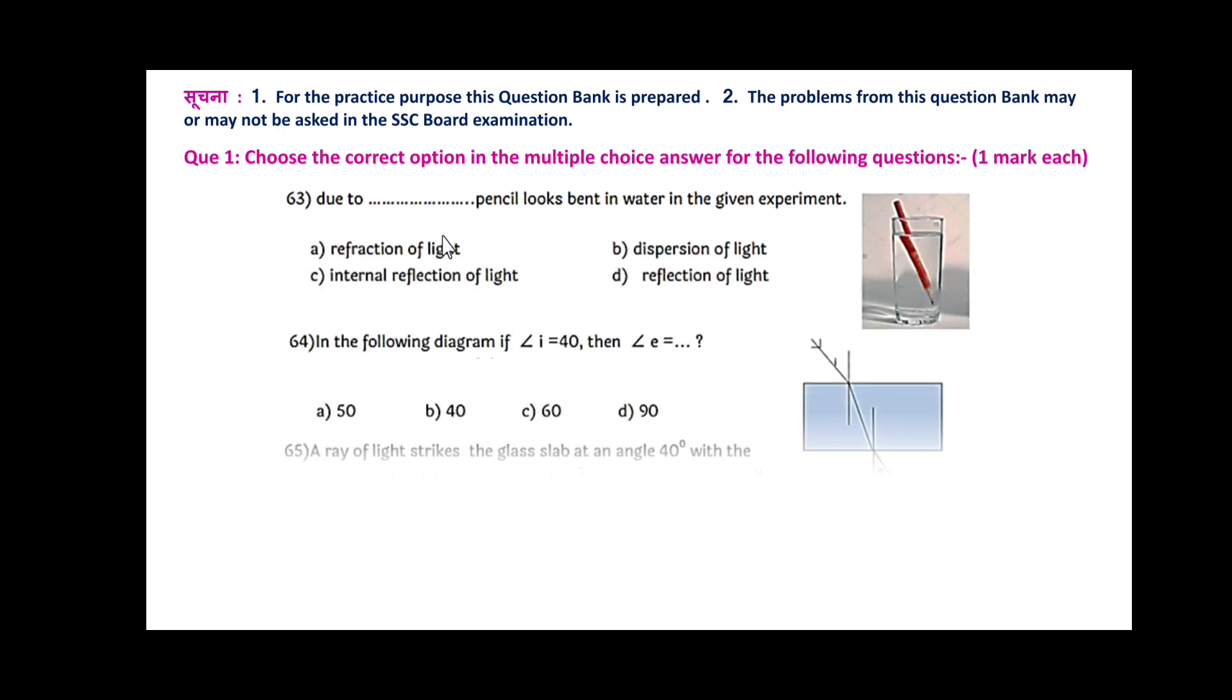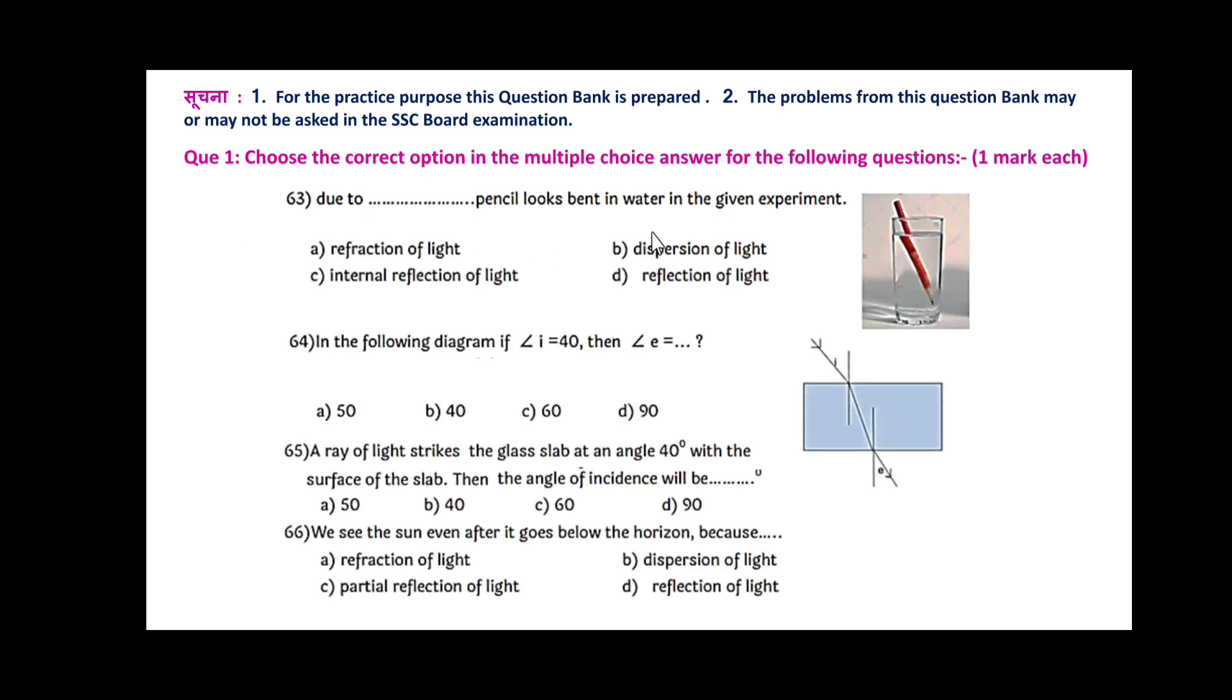Number 1: Due to refraction of light, pencil looks bent in water in the given experiment. Next, question number 64: In the following diagram, angle I is 40. Then what would be angle E, angle of emergence? Angle of incidence is 40. What is the value of angle of emergence? That value is 40.